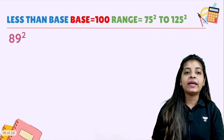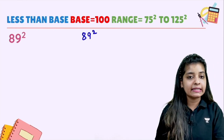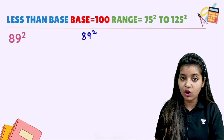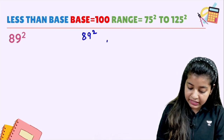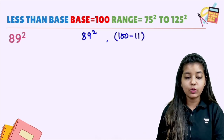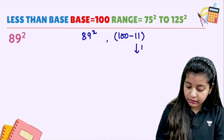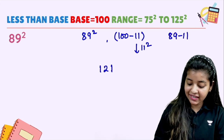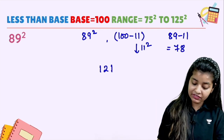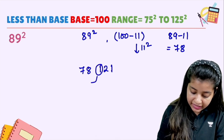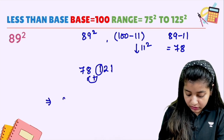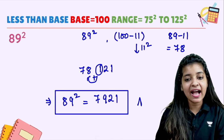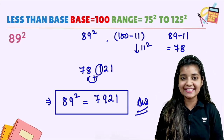89 squared — let's see. 89 can be written as 100 minus 11. 11 squared is 121. 89 minus 11 gives 78. The 1 carry forwards — so 79 and 21 stays. So 89 squared is equal to 7921, and this is your answer everybody.